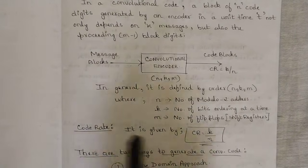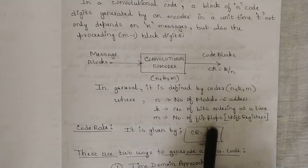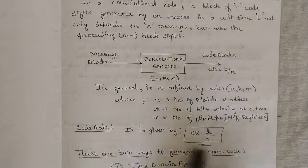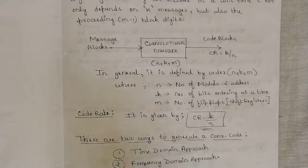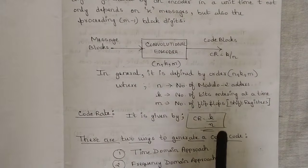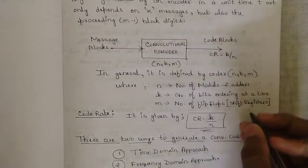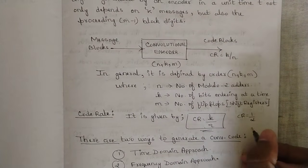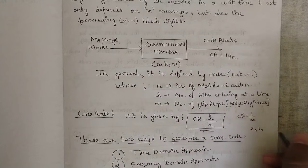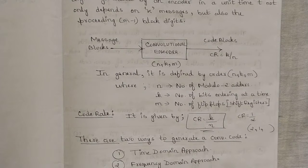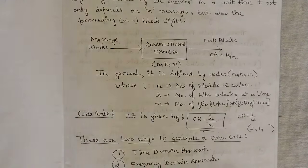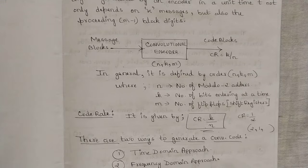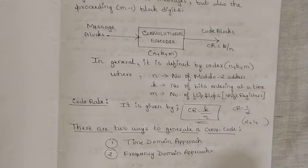One more parameter is the code rate, also called CR, given by k divided by n. This is a general formula you need to know for solving problems, because in questions they might not give you the order directly - instead they might give you the code rate. For example, if the question gives a code rate of one by two, you should know that two corresponds to n and one corresponds to k, giving you two comma one comma m format. Remember the code rate because some question paper problems give the encoder order in terms of code rate.